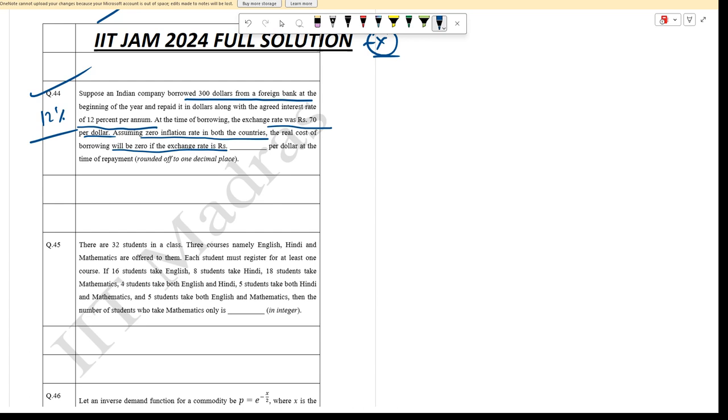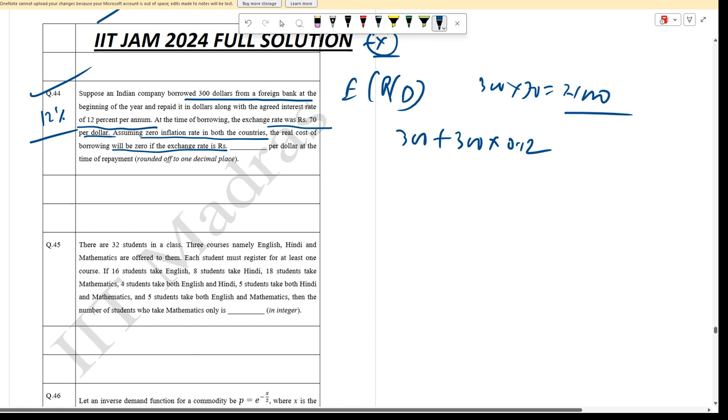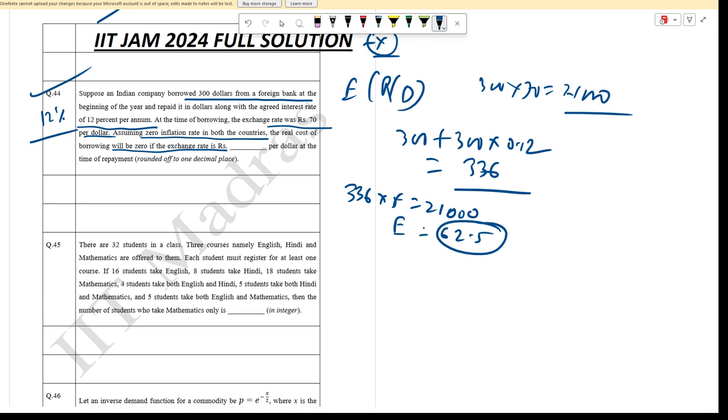To find the real cost of borrowing, we need to calculate the exchange rate. At the time of repayment, the Indian company needs to repay the loan amount plus 12% interest, so 300 plus 36 equals 336 dollars. We need to compare the rupee value, so 336 times the exchange rate equals 21,000. Therefore E equals 21,000 divided by 336, which is approximately 62.5. The real cost of borrowing will be zero if the exchange rate is approximately 62.5 rupees per dollar at the time of repayment.